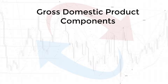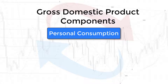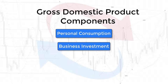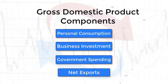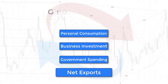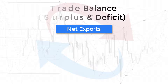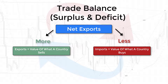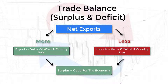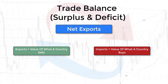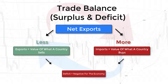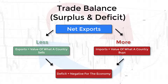The components of gross domestic product are personal consumption, business investment, government spending, and net exports. If a country is receiving more in revenue from exporting than importing, this would be viewed as good for the economy as the country's balance sheet would show a surplus. If the value of a country's imports are more than its exports, this is viewed as negative for the economy, as the country's balance sheet would show a deficit.